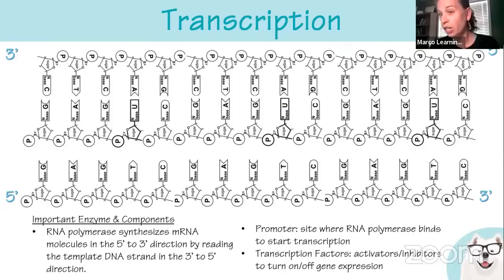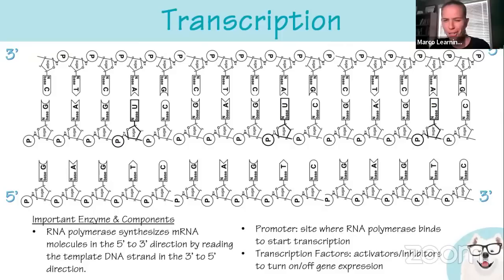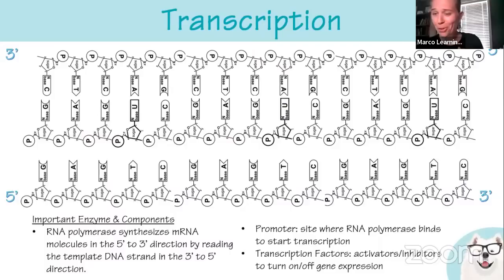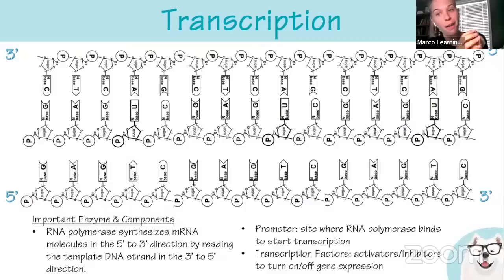The promoter region is where RNA polymerase binds to start transcription. Transcription factors turn genes on and off — they allow a tighter hold for RNA polymerase to bind to the promoter. Think of it like a baseball glove: you have the glove for a nice secure fit, plus your second hand covering the ball. Transcription factors help create a secure hold so RNA polymerase can start reading without trouble.